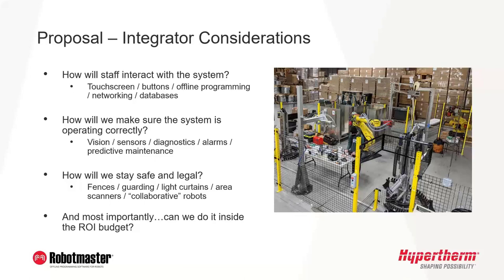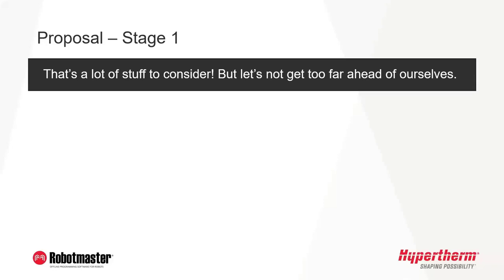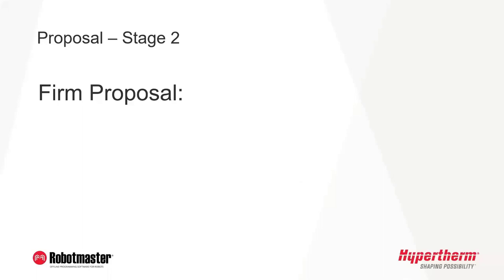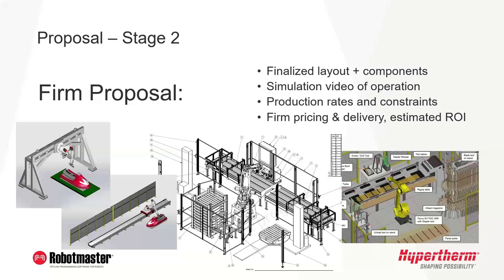There were an awful lot of question marks and a lot of things to work on, but let's not get ahead of ourselves. We first want to make sure that an automated system is going to make sense for this application without burning up too much time on both sides. So we'll first prepare a budgetary proposal for our customer — it's going to include some proposed layout options, probably a few major components and features, estimated production rates, and some budgetary pricing within a plus-minus range. If this all looks good and it looks like it would probably make good business sense to our customer, we'll take things a bit further in order to de-risk the project for both parties. So we'll go ahead and prepare a firm proposal, including a finalized layout with components, simulation videos of operation, production rates and constraints, and firm pricing and delivery with some estimates on return on investment. At the end of this, if we've gotten good information and we've done a good job, it should be self-apparent that there's a good business case to move forward.